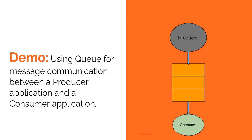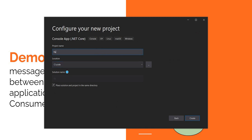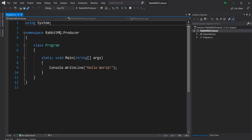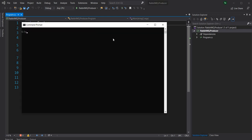Now it's time for the demo. We are going to use a single producer and consumer scenario. For that, I'm first going to create a .NET Core console application which will act as a producer, so I'm going to create a new .NET Core application and name it RabbitMQ.Producer. Now the project is ready but we need to install RabbitMQ, so let's do that first before moving on to code. I'm going to install a Docker image of RabbitMQ.